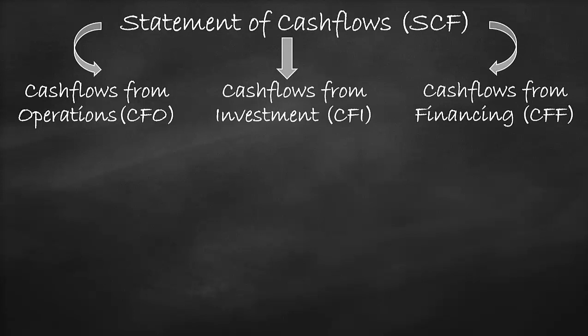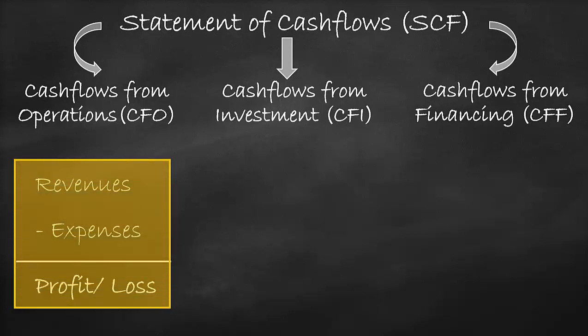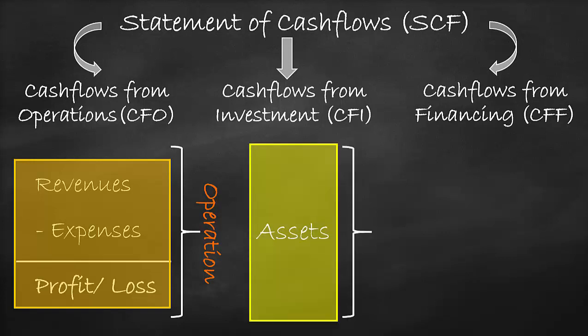Cash flows from operations refers mainly to those inflows and outflows arising from companies' operations, and these are reflected in the income statement. Cash flows from investment refers mainly to those inflows and outflows from the investment side of the balance sheet. Examples include the acquisition and disposal of non-current assets.